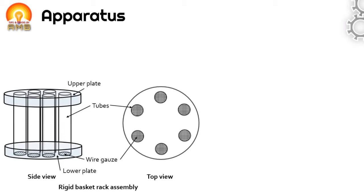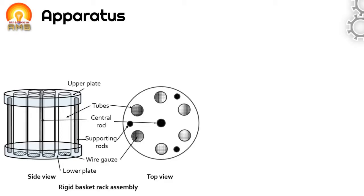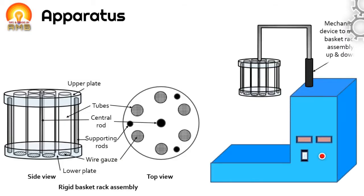At the lower end, the tubes have woven wire gauze made from stainless steel. The upper and lower plates are held together by three metal rods at the periphery and one metal rod in the center. The central rod is connected to a mechanical device which moves the basket rack assembly up and down with the help of a motor at a rate of 28 to 32 times per minute.